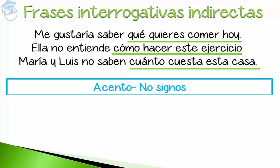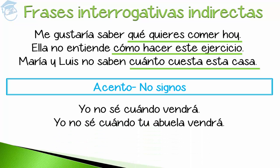Look at how you form an indirect interrogative phrase. You have 'Yo no sé cuándo vendrá' — I don't know when he or she is coming. You have the question word followed by the verb. But you can also include the subject: 'Yo no sé cuándo tu abuela vendrá' — I don't know when your grandma is coming. Both forms are correct.